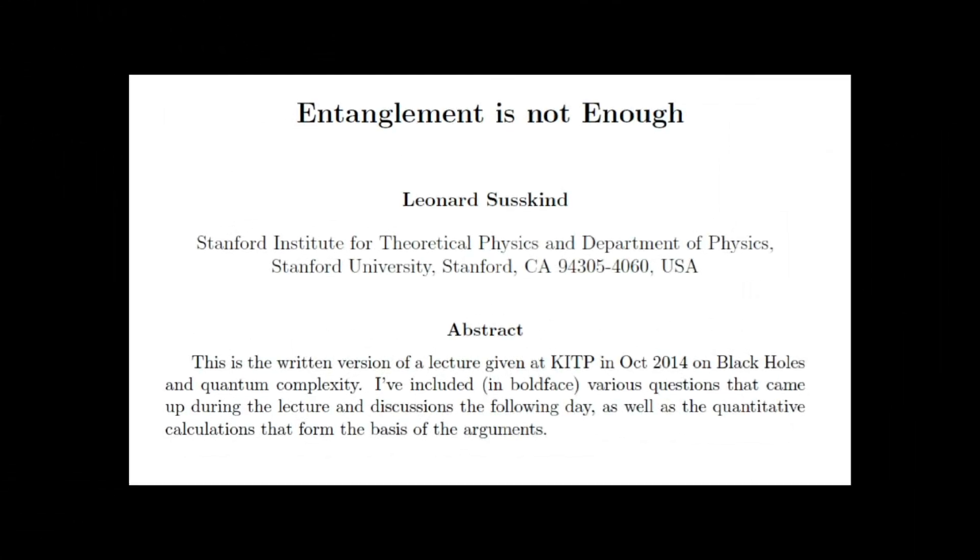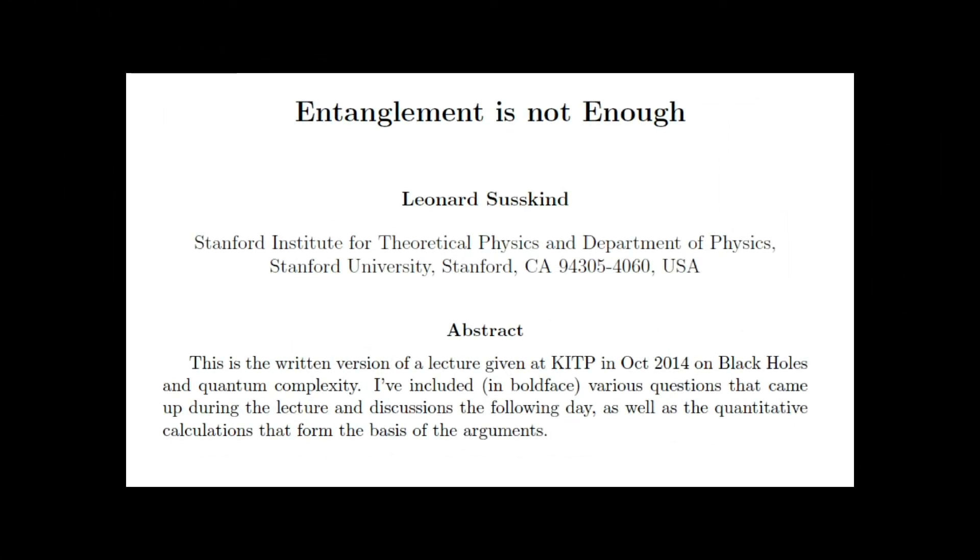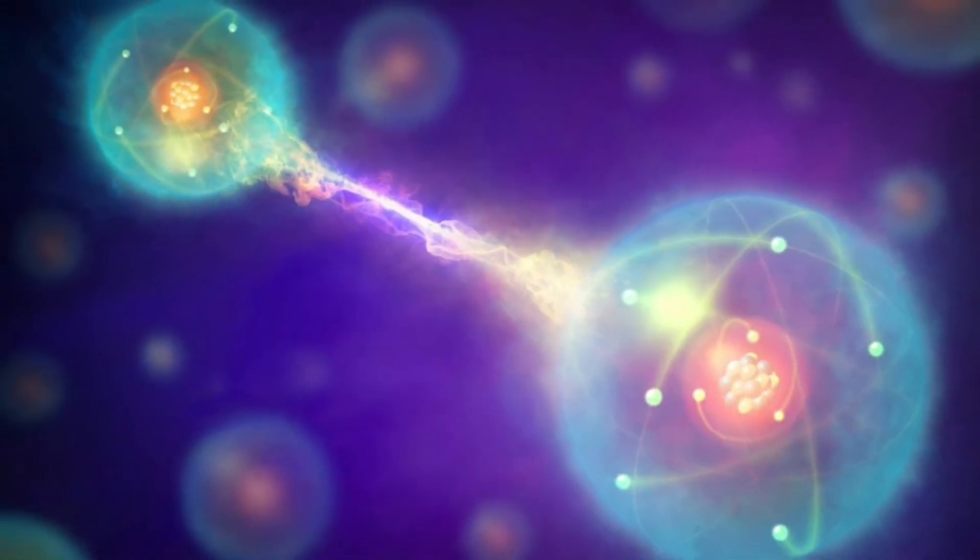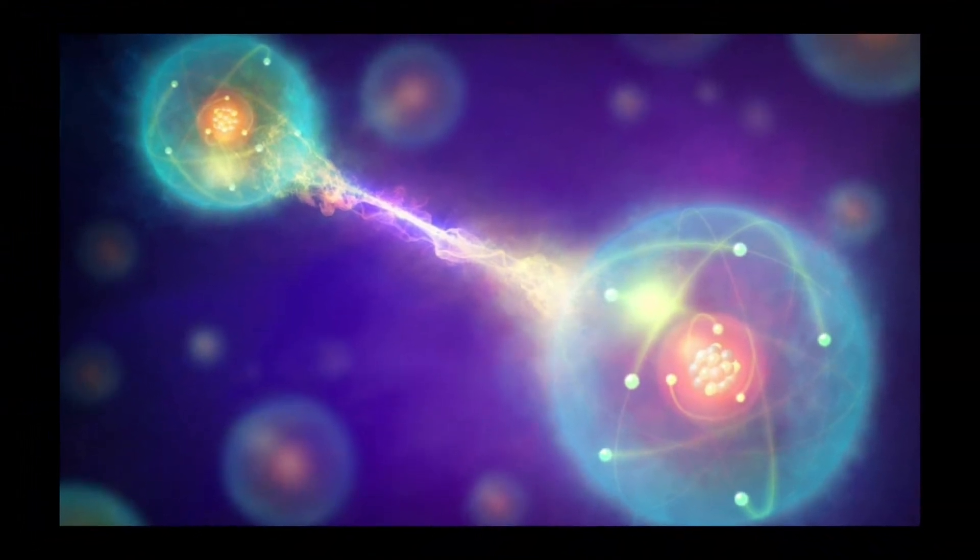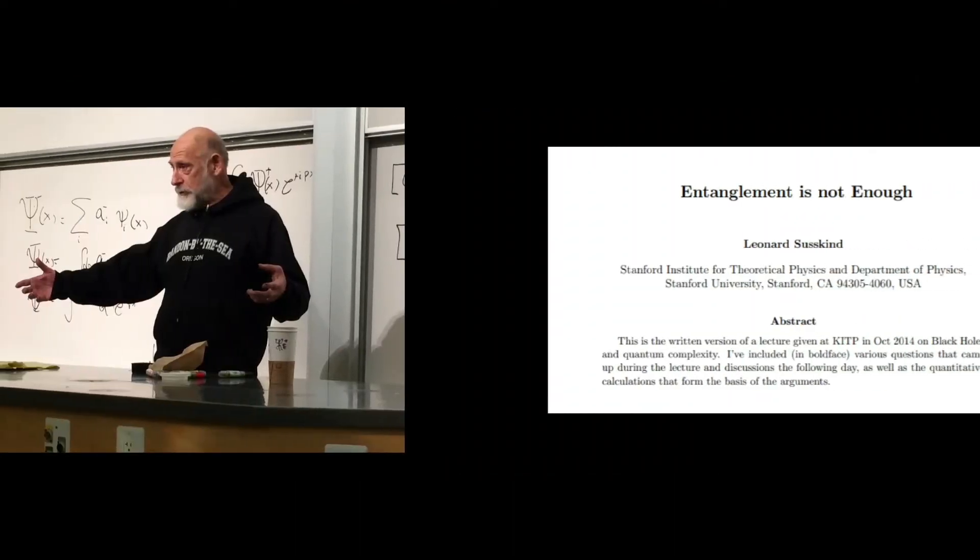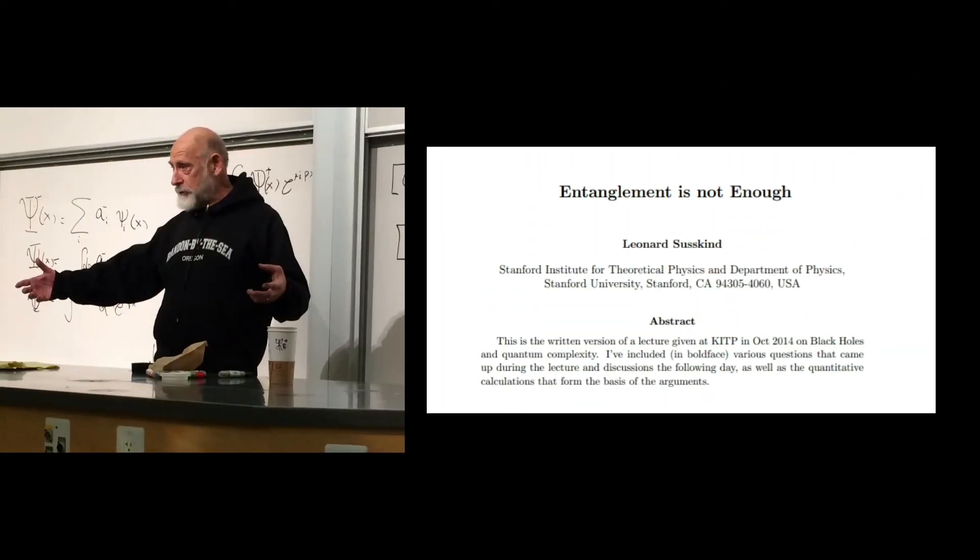In a recent paper by Leonard Susskind, he argues that entanglement is not enough to capture the information behind the horizon of black holes. Entanglement is a very powerful tool and has been proven extremely useful in several branches of physics, but it is limited while probing the growth of wormholes connecting black holes. Instead, Susskind proposed quantum complexity to be a good alternative.